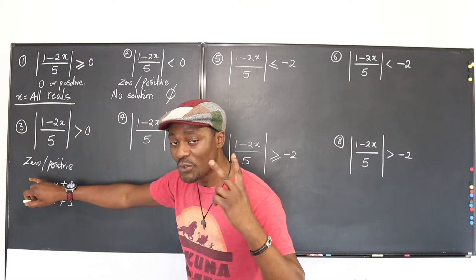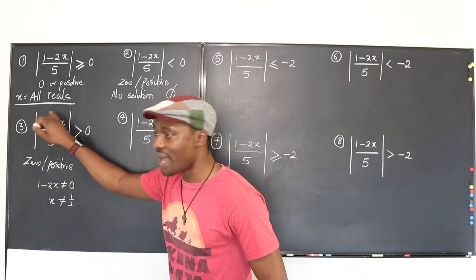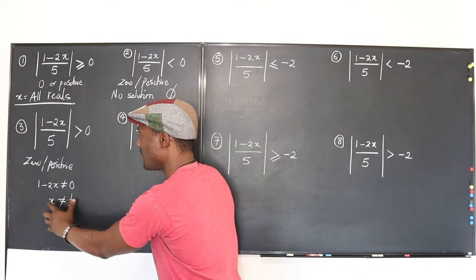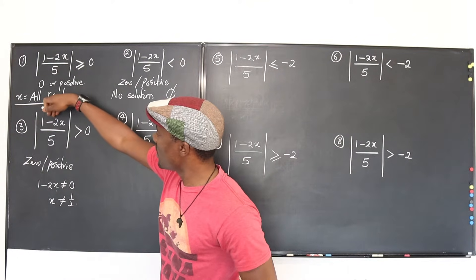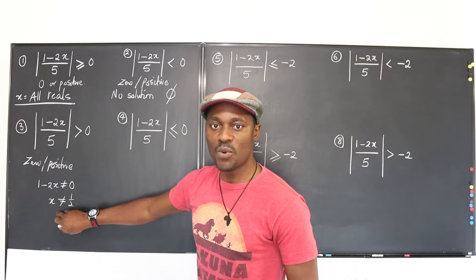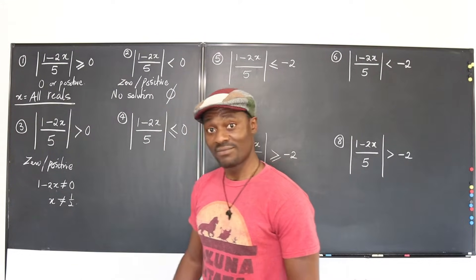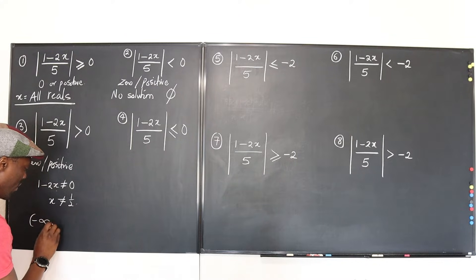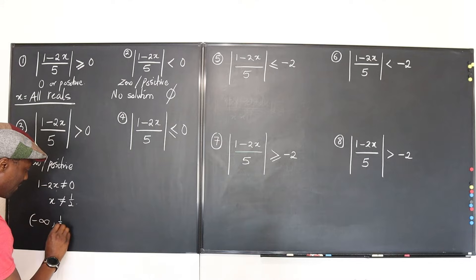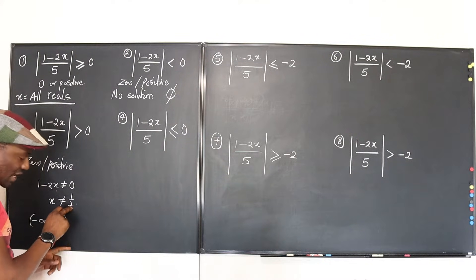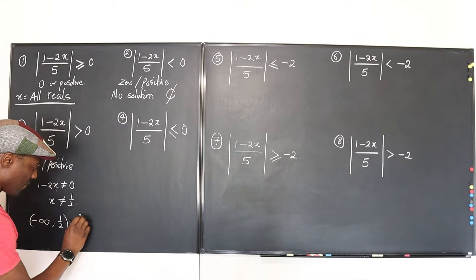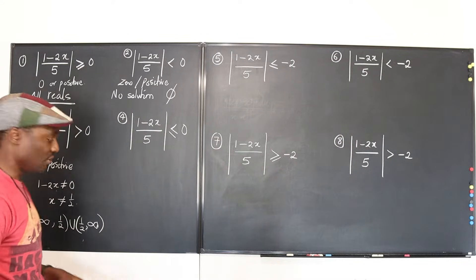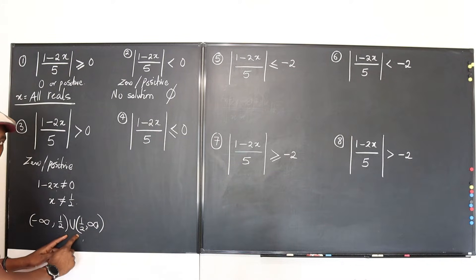There are always two conditions in absolute value functions: what's inside comes out as zero or as a positive. We want just the positive — we don't want the zero. So we avoid the number that gives us zero, and that is x equals one-half. The solution is x is not equal to one-half. In interval notation: from negative infinity to one-half, union one-half to positive infinity.